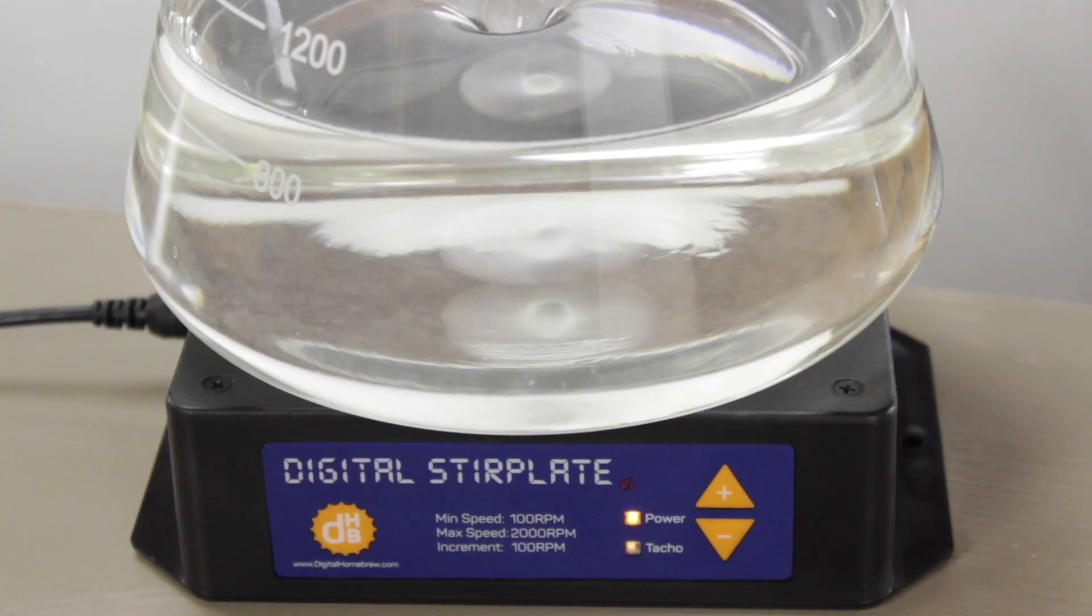And if I turn that up a bit more, at 1400 rpm here, we can see now we're forming a much larger vortex in the top of it as well.